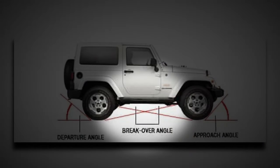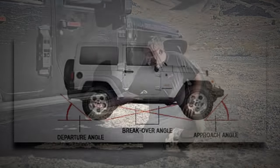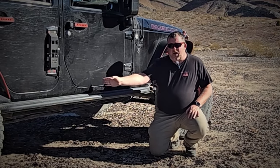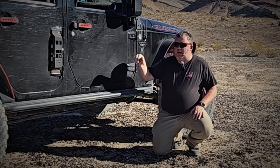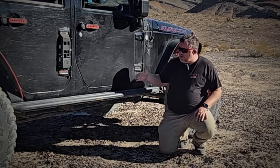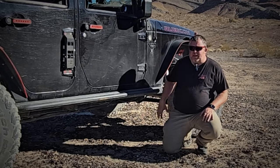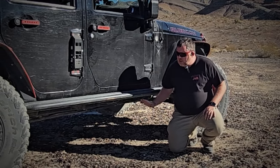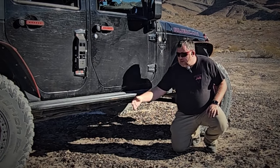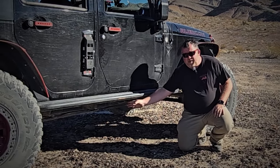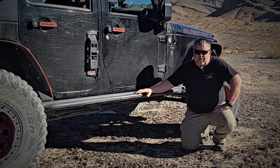Breakover angle is the measurement from the ground to the lowest point on your frame in the center of the vehicle — not the physical center of the vehicle, but the centerline between the front tire and the rear tire. It defines the highest object you can clear going over before you high-center or get hung up on the frame.